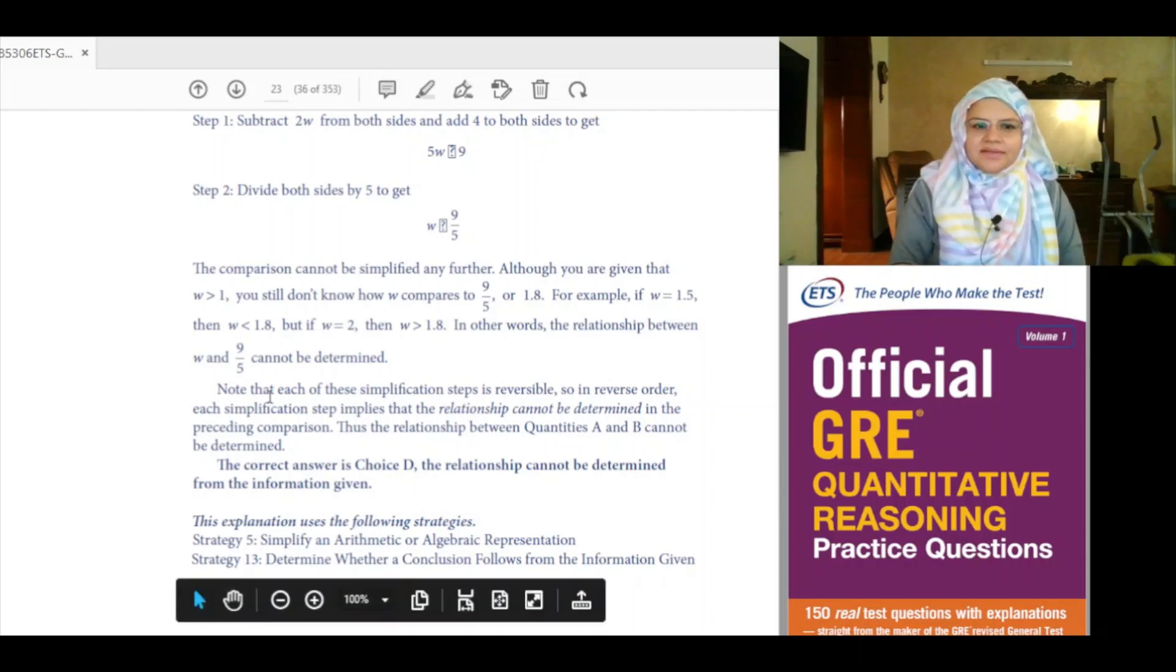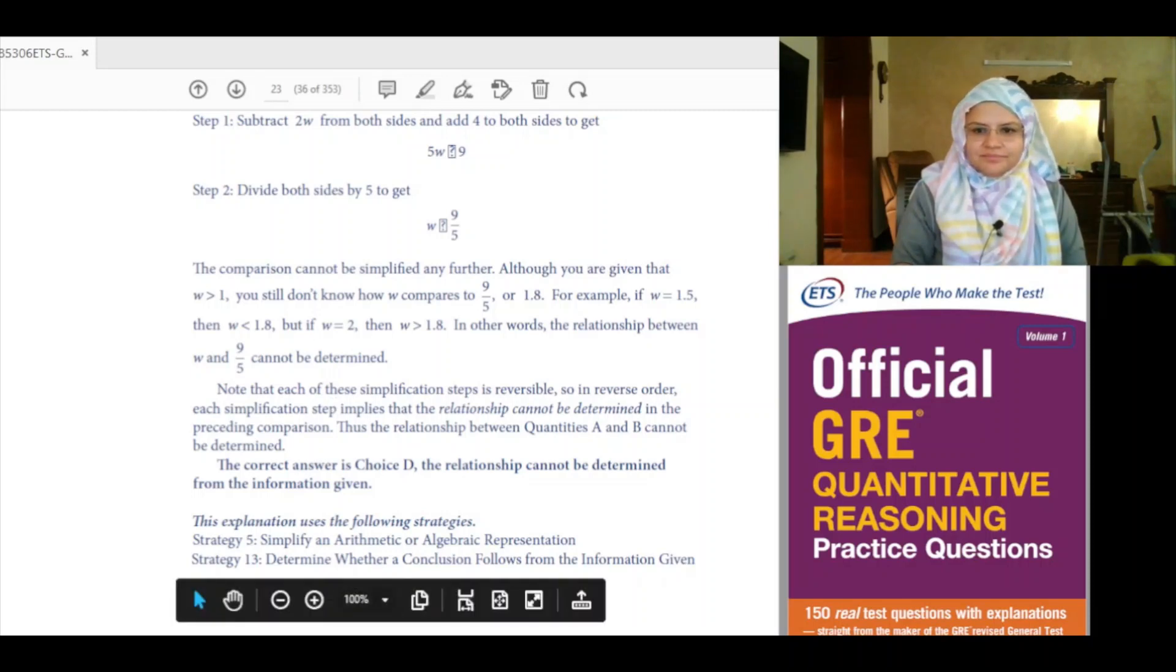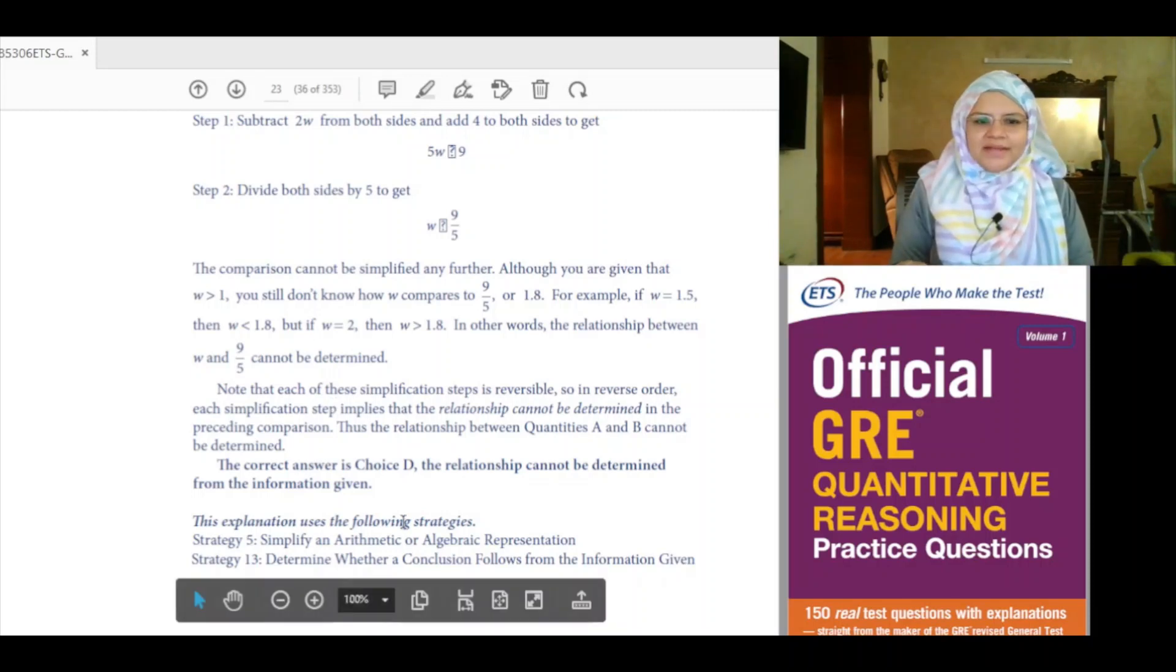Notice that each of these simplification steps is reversible, so in reverse order, each simplification step implies that the relationship cannot be determined in the preceding comparison. Thus, the relationship between quantities A and quantity B cannot be determined. The correct answer is choice D: the relationship cannot be determined from the information given.